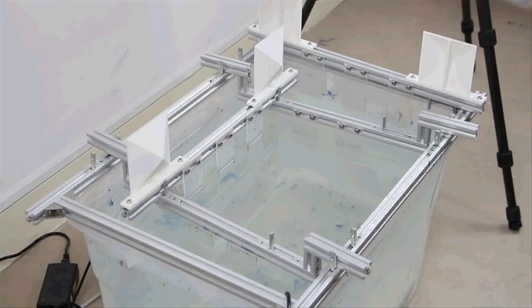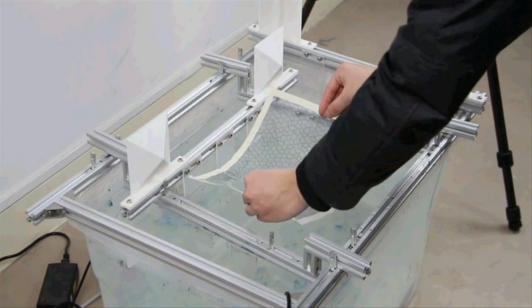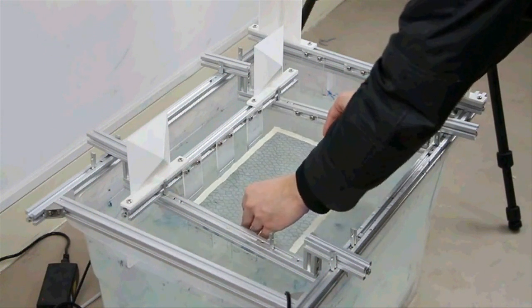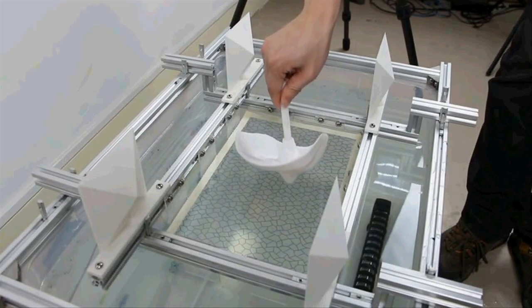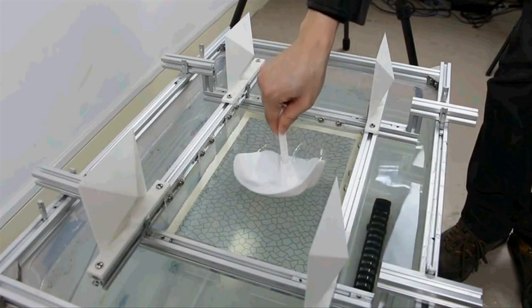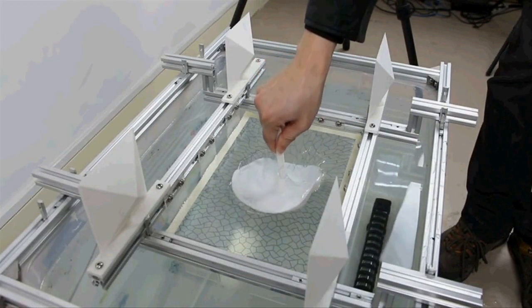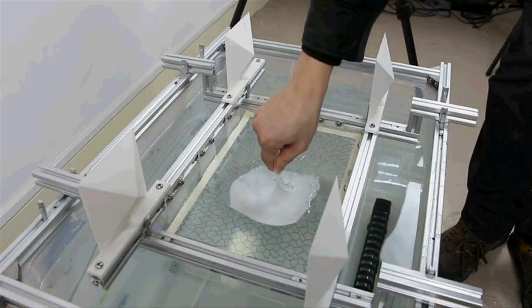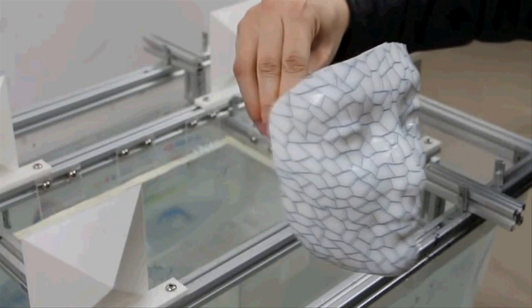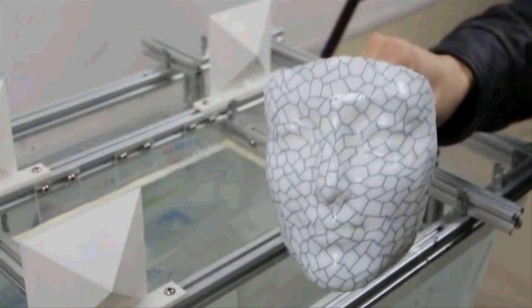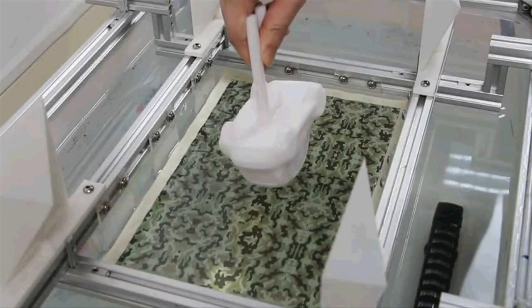Hydrographic printing is a well-known technique in industry for transferring color inks on a film to the surface of a manufactured 3D object. It enables high-quality coloring of object surfaces and works with a wide range of materials, but suffers from the inability to accurately register color texture to complex surface geometries.